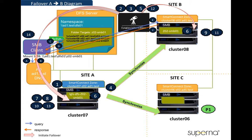The next diagram shows the DFS mode failover from A to B. During this failover from A to B, the SMB share name on cluster 07 is changed — the DFS prefix is renamed to the actual share name. And the SMB share name on cluster 08 is also renamed to the actual share name. With these SMB share name changes, the DFS path to cluster 08 becomes the active path for the client to access after the failover.